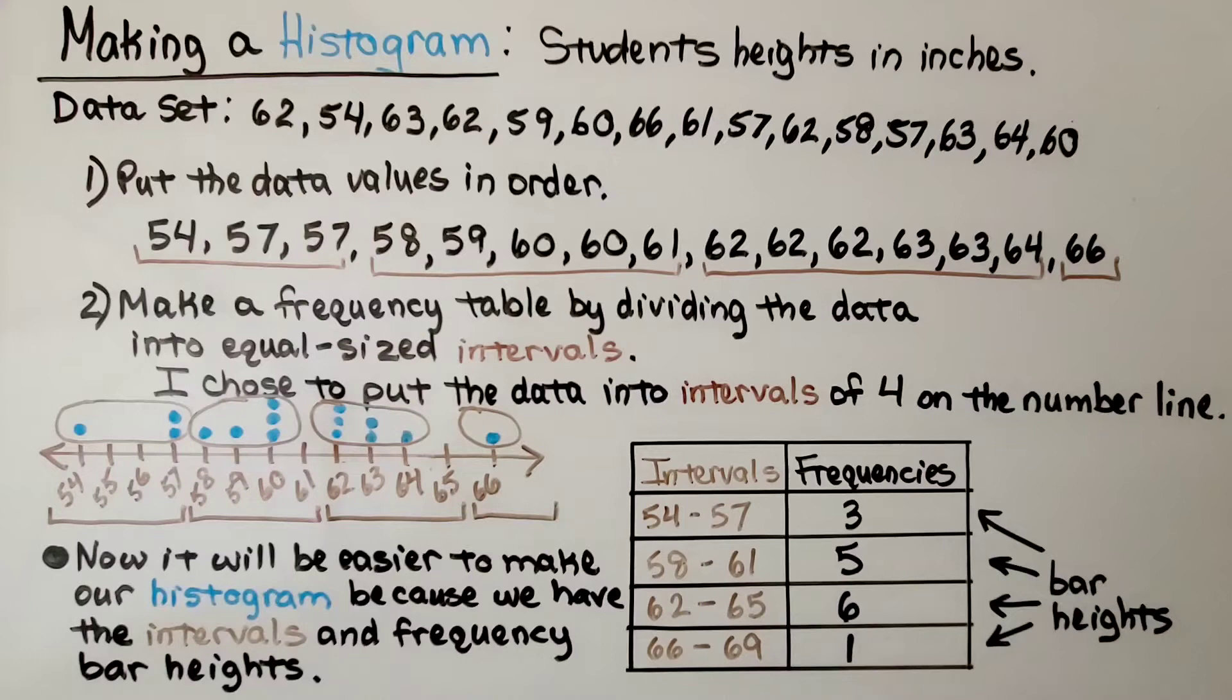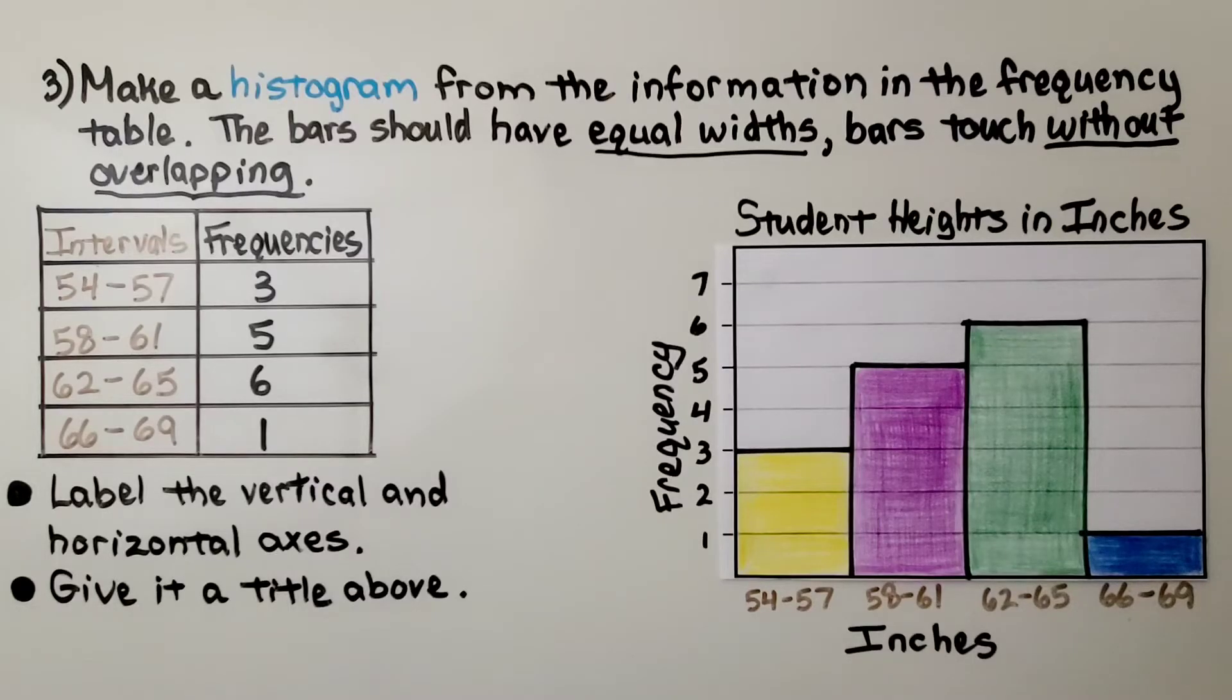We make our histogram from the information in the frequency table, and the bars should have equal widths. Mine ended up being 2 inches wide each. And the bars touch without overlapping. We label the vertical and horizontal axes. We have frequency and numbers 1 to 7. And we write inches down here and our intervals underneath the bars. We give it a title above, student heights in inches.